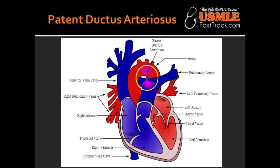What is patent ductus arteriosus? In the fetal period, there is a shunt that happens right to left, which is a normal condition. Blood goes from the aorta to the pulmonary artery — this is a normal situation in the fetal period.